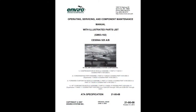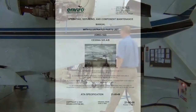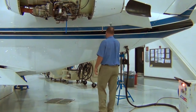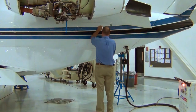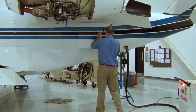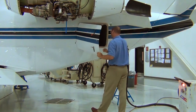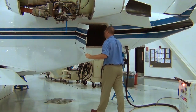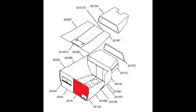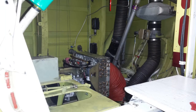Refer to the applicable EnviroSystems component maintenance manual for maintenance intervals and information. The compressor hour meter is located in the aft baggage area. Access is gained by opening the aft baggage door. For early 525 serials, access the compressor assembly through the forward wall of the aft baggage compartment.